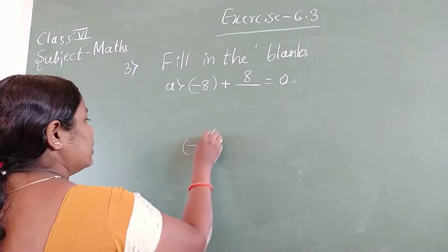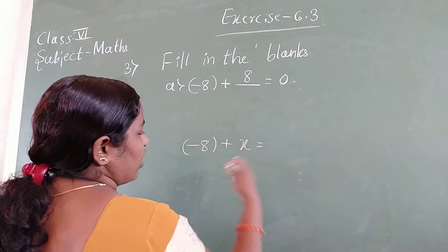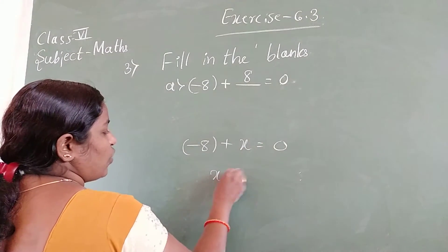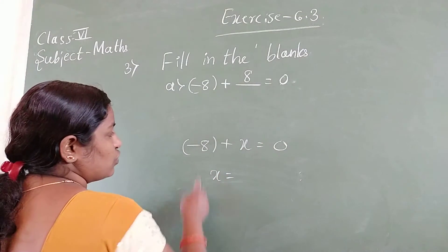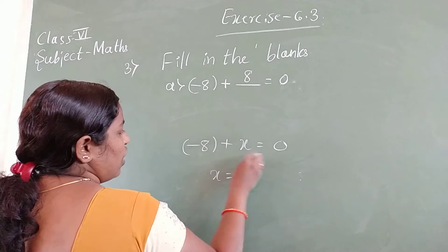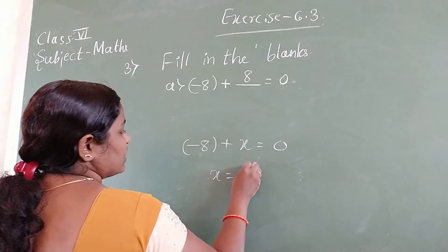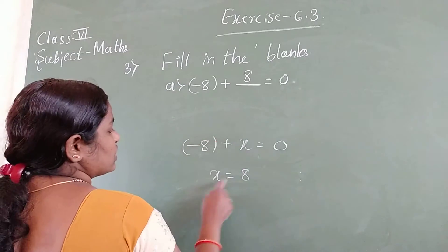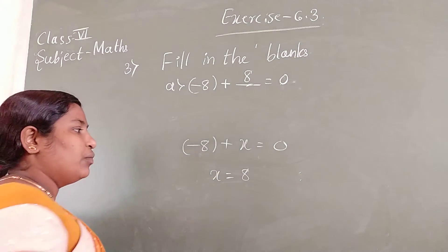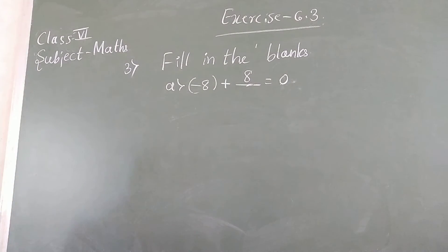Another method: put the blank as x. Minus 8 plus x equals 0. Pass minus 8 to the other side — it becomes plus 8. So x equals 8. Two types you can do this.